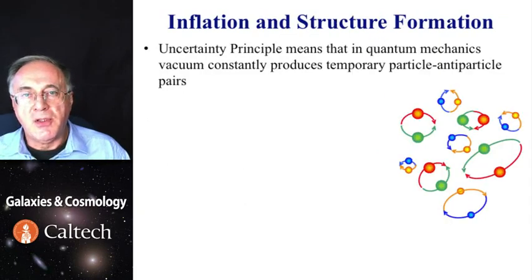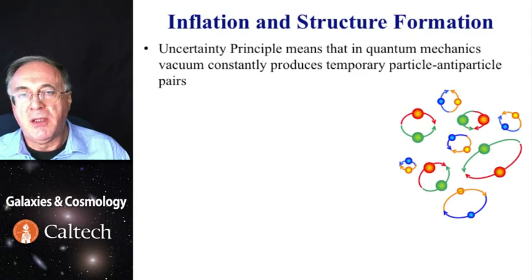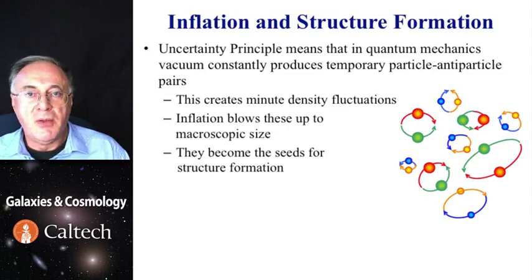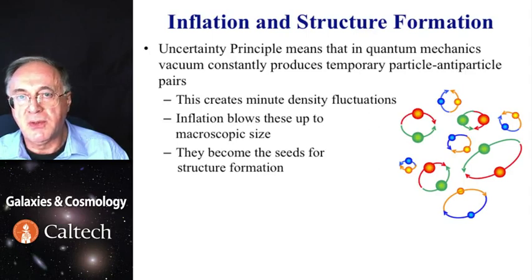Inflation also tackles the origin of the large-scale structure we see. In quantum physics, the vacuum is not empty, but it's populated by virtual particle-antiparticle pairs that appear and disappear subject to the uncertainty principle. They cause essentially quantum fluctuations of energy density in the early universe. Now inflation blows up these minute quantum fluctuations of physical vacuum to enormous size, where in fact they can be really seeds of the large-scale structure that we observe today.